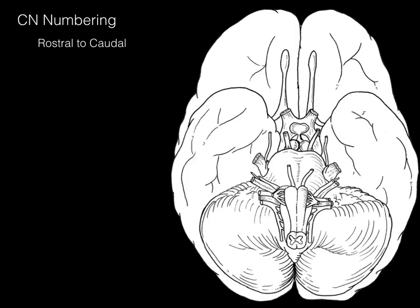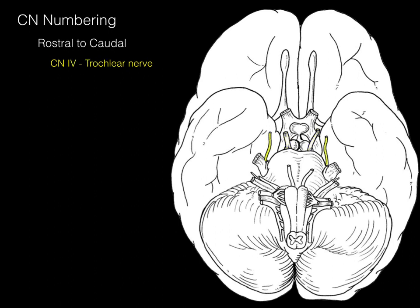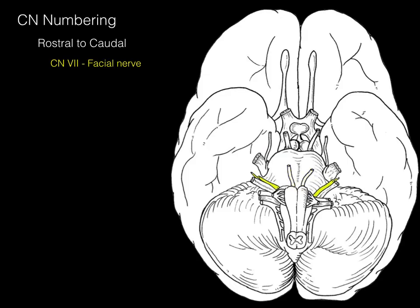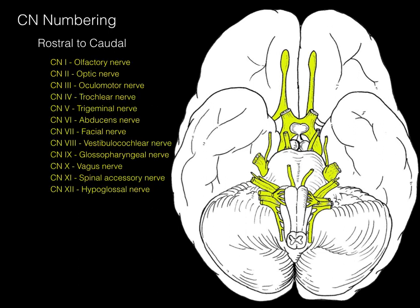In this inferior view of the brain, the rostral-to-caudal numbering is clear. Cranial nerve 1 is the olfactory nerve for smell. CN2 is the optic nerve for vision. CN3 is the oculomotor nerve for eye movement muscles. CN4 is the trochlear nerve, supplying one eye muscle. CN5 is the trigeminal nerve, named for its three branches V1, V2, V3, with its ganglion visible. CN6 is the abducens nerve. CN7 is the facial nerve. CN8 is the vestibulocochlear nerve. CN9 is the glossopharyngeal. CN10 is the vagus nerve. CN11 is the spinal accessory nerve. CN12 is the hypoglossal nerve. All nerves are numbered from cranial nerve 1 down to 12 in rostral-to-caudal order.